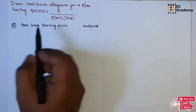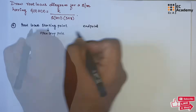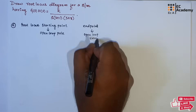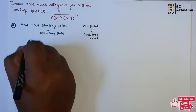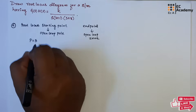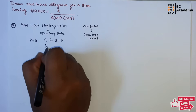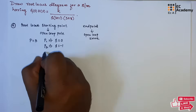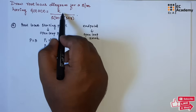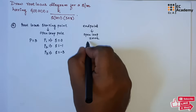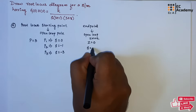The first step is to find the root locus starting point and end point. The root locus starting point can be determined by open loop poles and the end point by open loop zeros. This transfer function has 3 poles: pole 1 at s = 0, pole 2 at s = -1, and pole 3 at s = -3. In the numerator, there is no s term, which means the number of zeros equals 0, so the end point of the root locus will be at infinity.